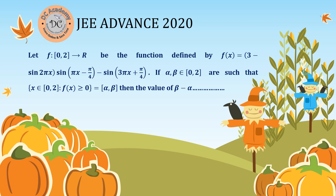In this video, we are going to solve a problem which appears in the year 2019 and it is a JEE Advanced problem. Here we have a function f which is defined on the domain 0 to 2, mapping to the real numbers, and it is defined by f(x) equal to some trigonometric function. It is given that alpha and beta also belong to the domain such that f(x) is greater than 0.